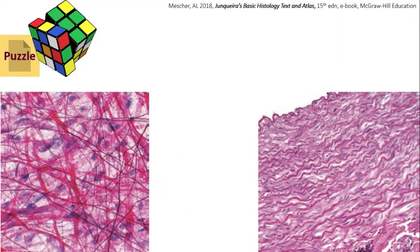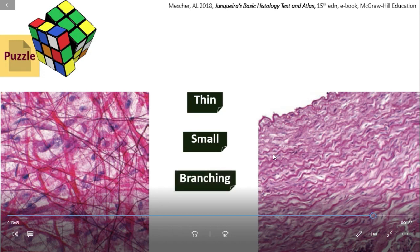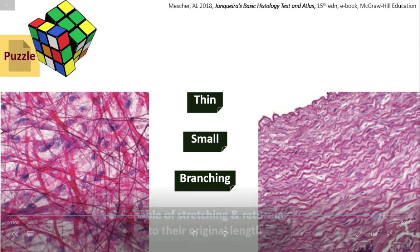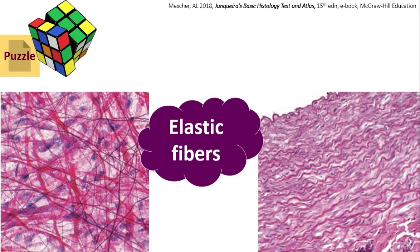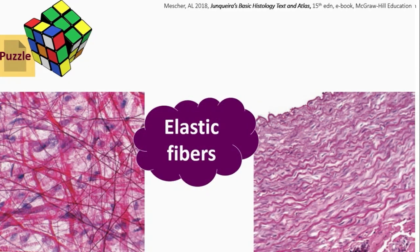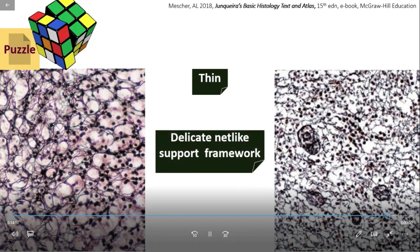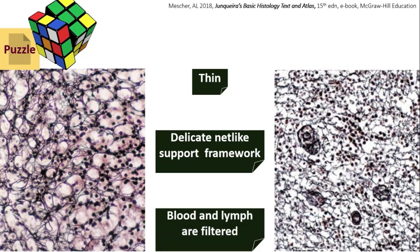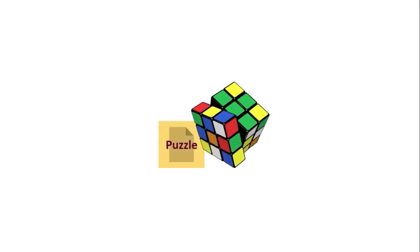Another puzzle: many thin small branching fibers are seen, present in peritoneal fat and blood vessel wall, capable of stretching and returning to their original length. Which fiber is present here? Yes — elastic fibers. Another puzzle: thin fibers forming a delicate net-like supportive framework, present in structures where blood and lymph are filtered. Can you name them? Yes — reticular fibers. The puzzles are solved.